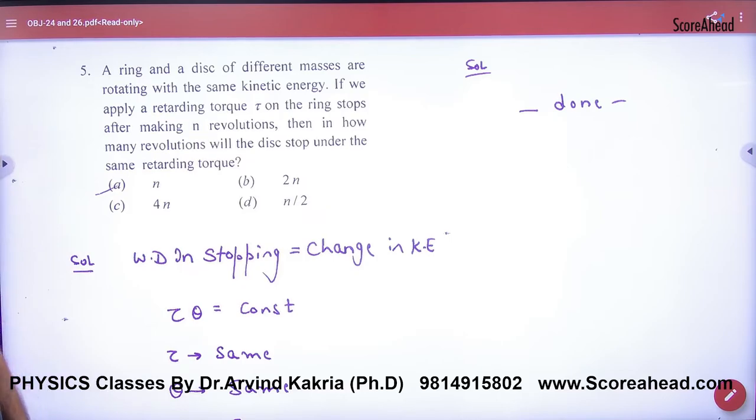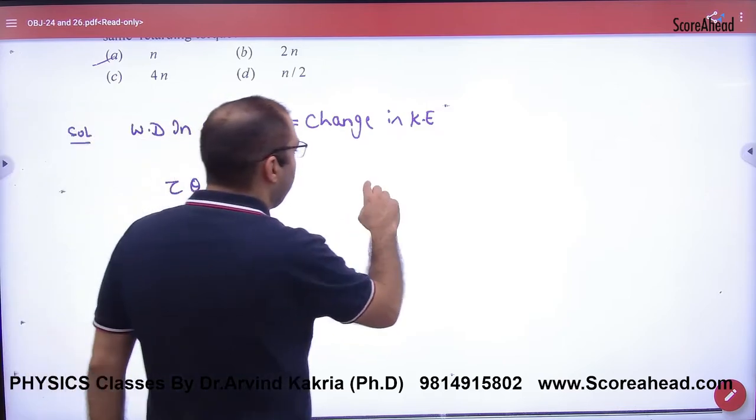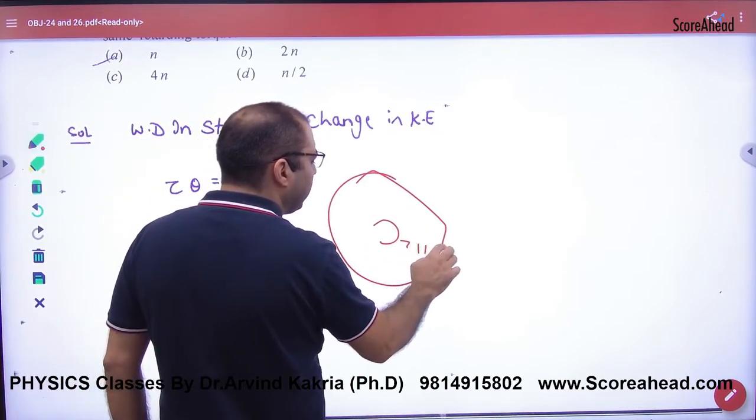Now, in the question, the retarding torque is the same. The torque is the same. So the theta is the same. When the angle of theta is the same, covering the same, so like one chakra, if any body will cut, then how much of the angle is in the center?